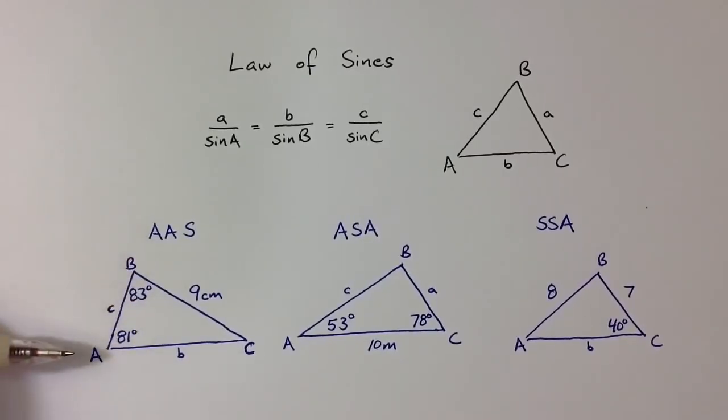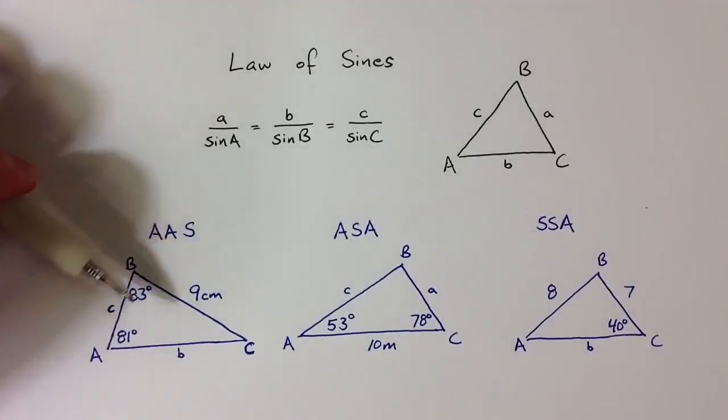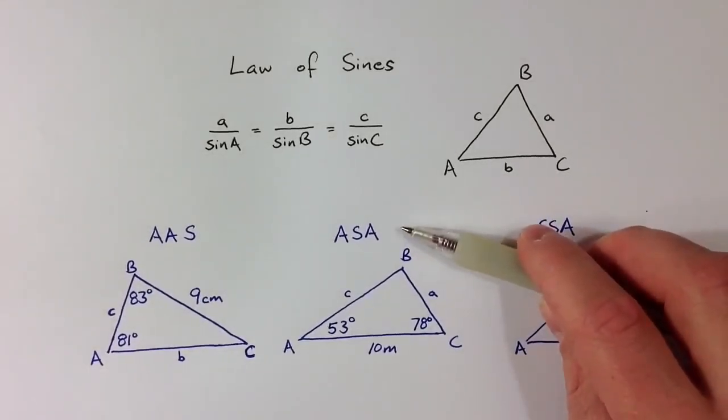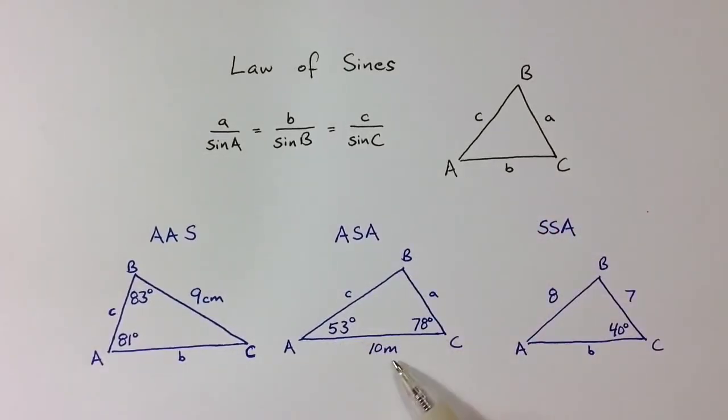Or angle-side-angle, which is given two angle measures and then the side length in between them. Or side-side-angle, where we have two sides and then the angle opposite one of those sides.